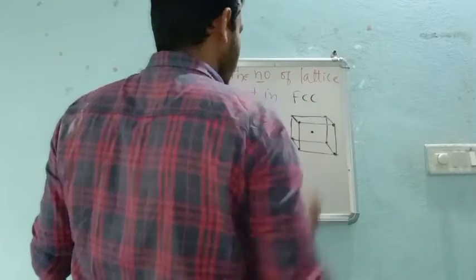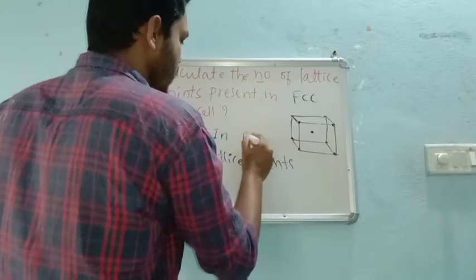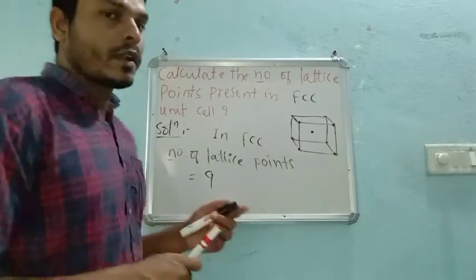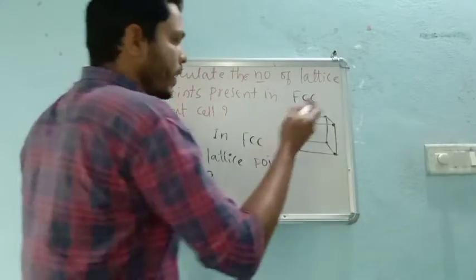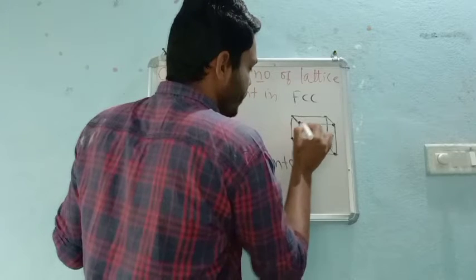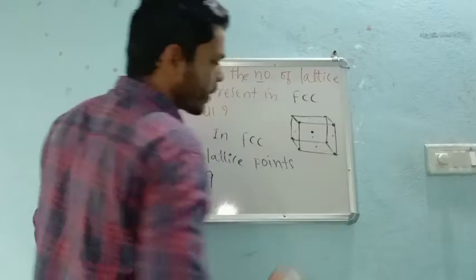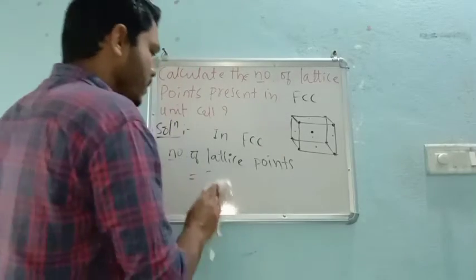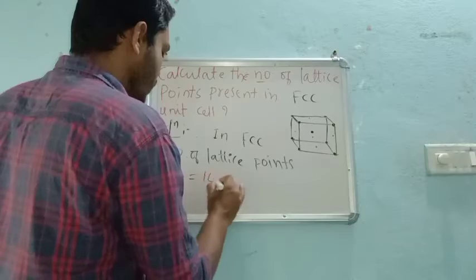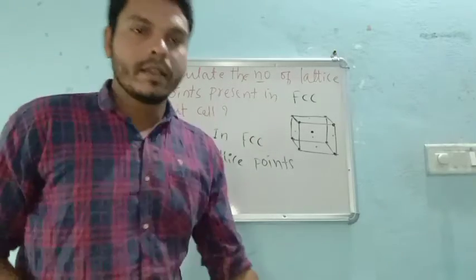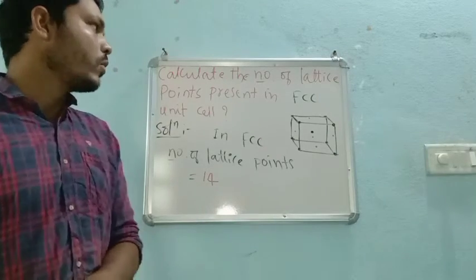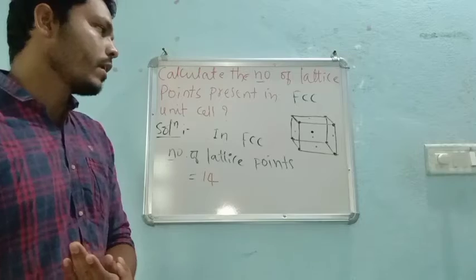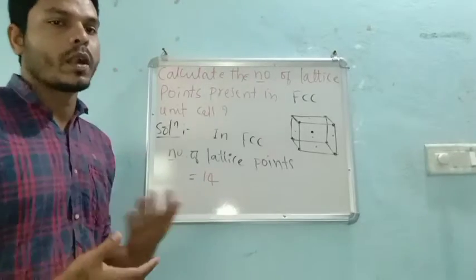In case of FCC: FCC is defined as corner plus face centers. How many corners? Eight. How many faces? Six — front, back, left, right, top, bottom. So eight plus six equals 14 lattice points present in an FCC type unit cell. That is how to calculate lattice points. It is already in our syllabus so we need to know what lattice points are.